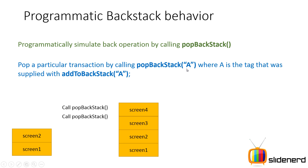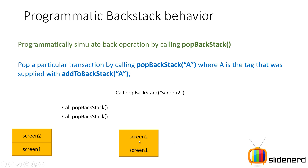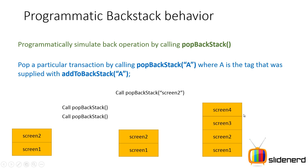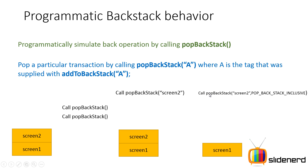There is another option: popBackStack() with a string argument, where the argument is the name supplied when calling addToBackStack. With screens 4, 3, 2, 1 in the stack and the user on screen 4, calling popBackStack("screen2") removes 4 and 3 and keeps screen 2 on top — the user is directly looking at screen 2. There is also a flag: popBackStack("screen2", POP_BACK_STACK_INCLUSIVE). This also removes screen 2 itself, showing screen 1. The difference is that the inclusive flag removes the named entry as well.